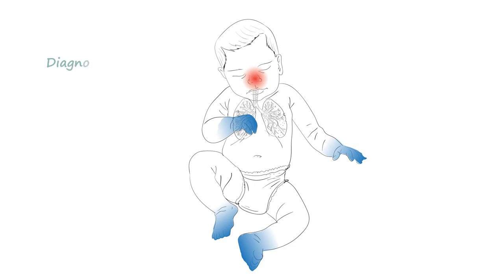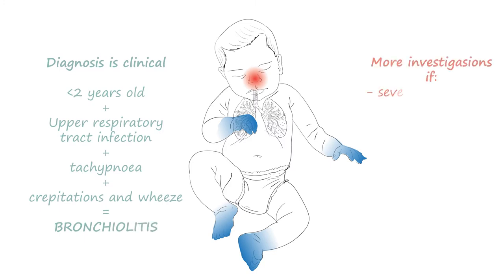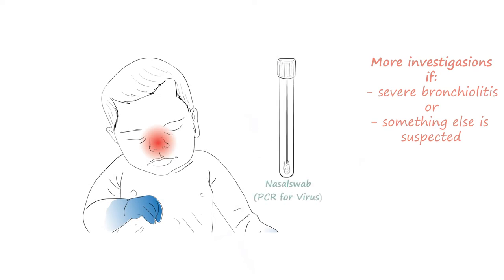The diagnosis of bronchiolitis is clinical. An infant or child less than 2 years of age presenting with initial symptoms and signs of upper respiratory tract infection, followed by a cough, tachypnea, inspiratory crepitations, and wheeze is likely to have bronchiolitis. There is usually no role for investigations unless the infant has severe bronchiolitis or another diagnosis is suspected.